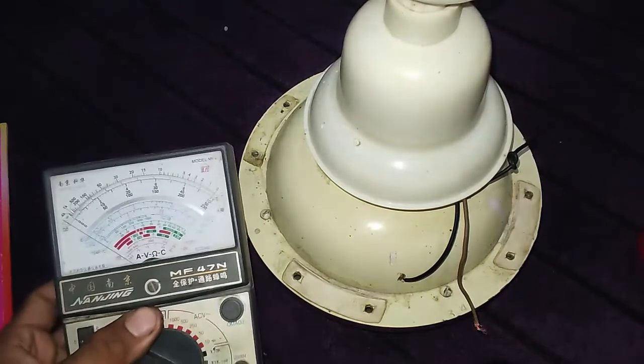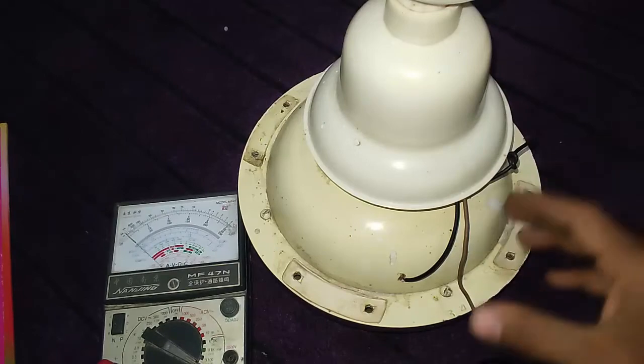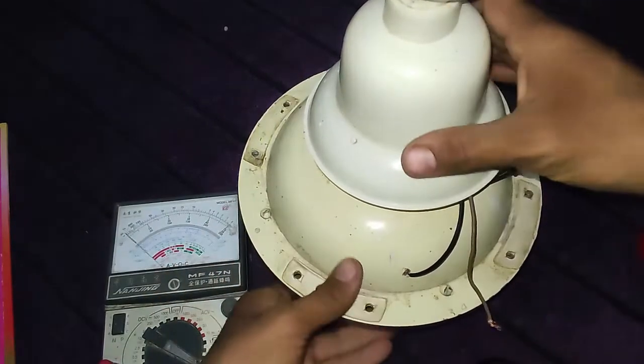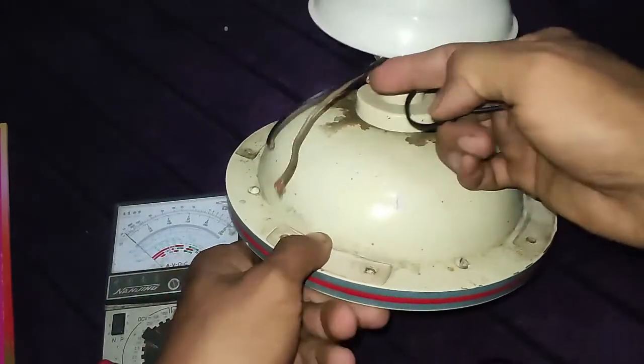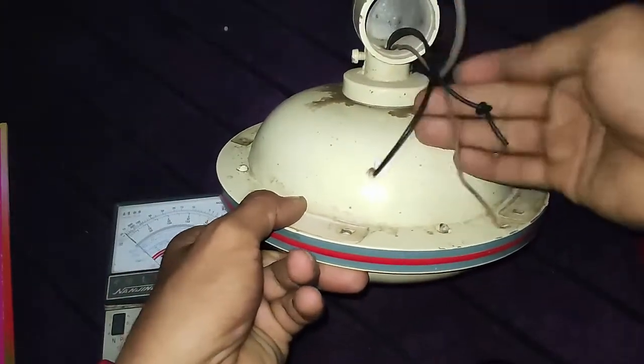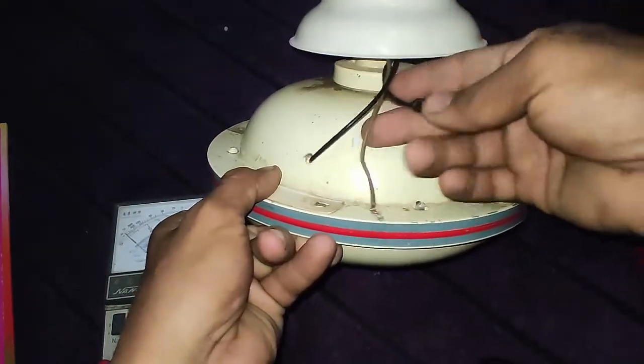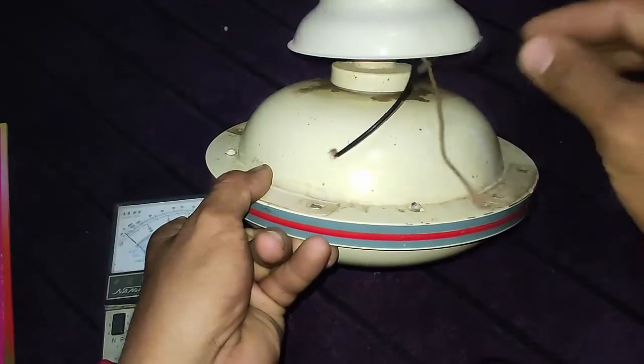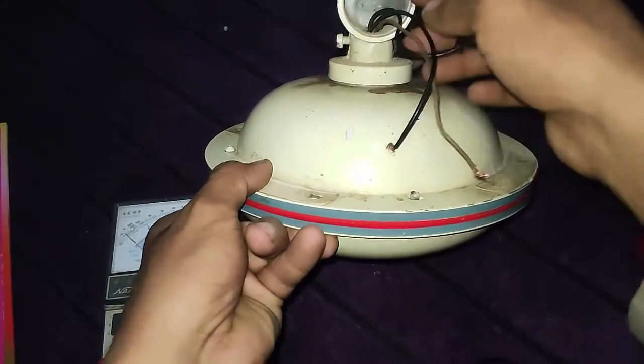In this video I will use this analog multimeter and I will also show you how to connect the capacitor to this ceiling fan. First of all, I have three wires which come from the internal winding. If I had four wires, the connection would be different and we would need to create a common connection, but in this case I already have a common point.